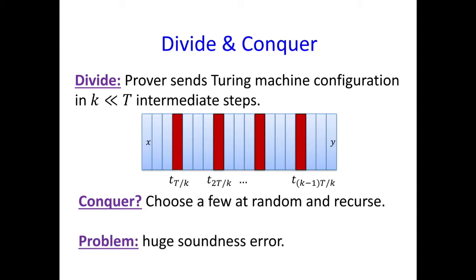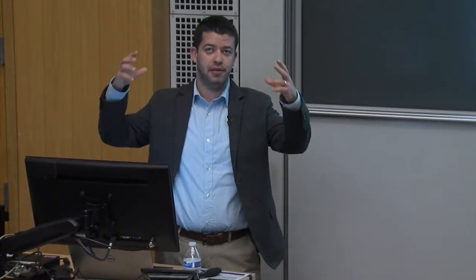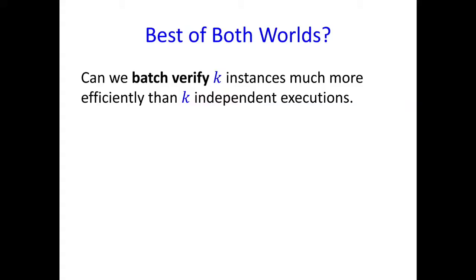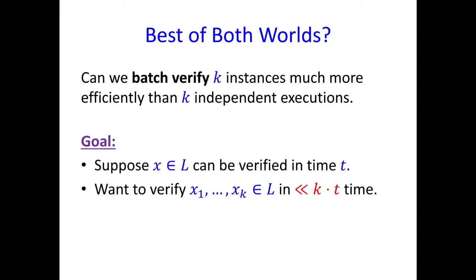So that also won't do — there's going to be a huge error. What we'd really like is a solution that gives the best of both worlds: we want to be able to verify each and every one of these sub-computations at a cost that is less than running the underlying interactive proof for each and every one of them. We call this batch verification of interactive proofs, and I think it's a really interesting idea. Imagine the following scenario: you have some language L in which you can verify membership where the verifier runs in time little t. So verifying a single instance you can do in time t. Now I'm going to ask you to verify k separate inputs. Of course, you could verify in time k times t by running the interactive proof k times, but I'm asking if you can do better — can you verify in time significantly less than k times t?